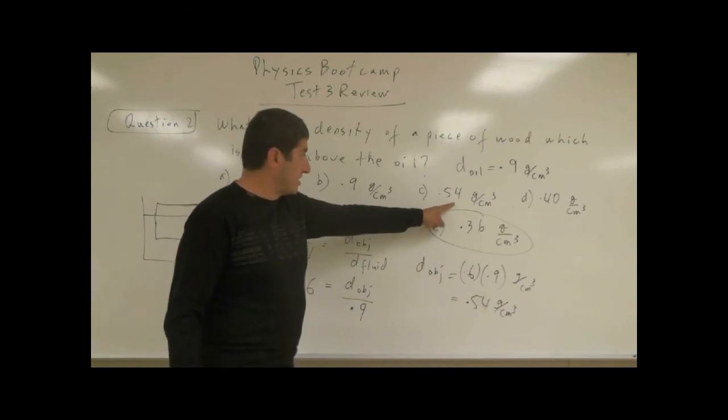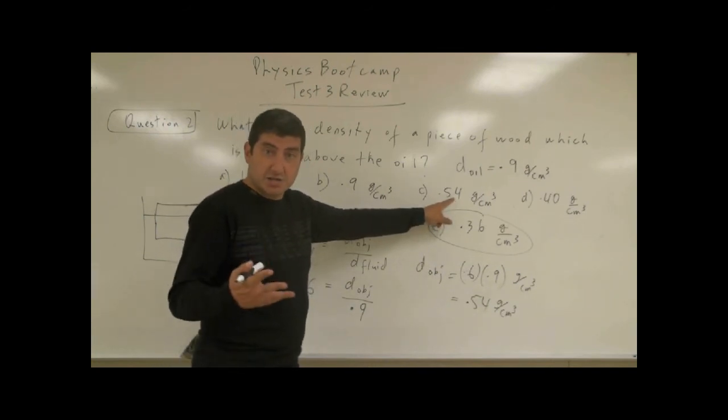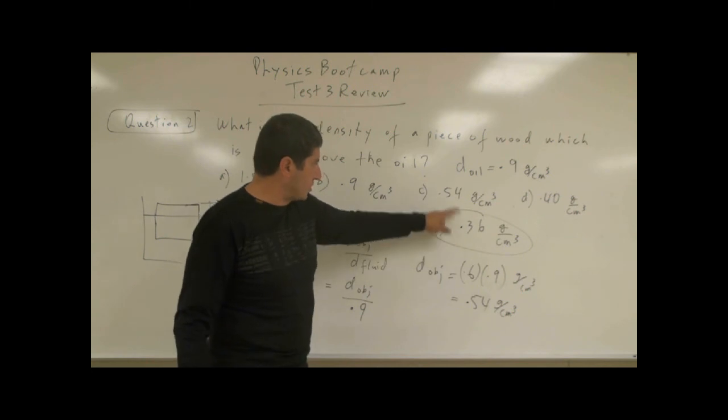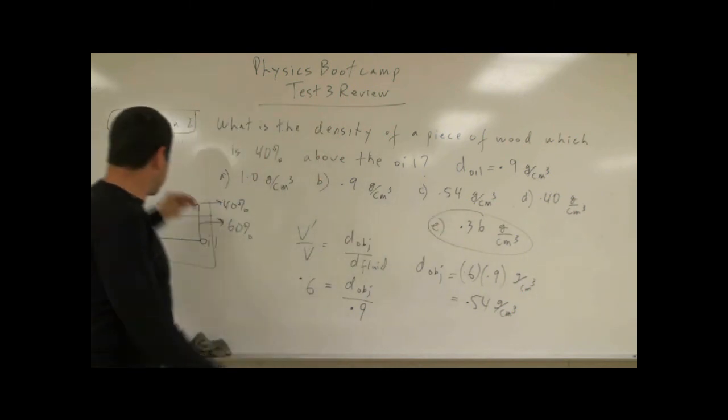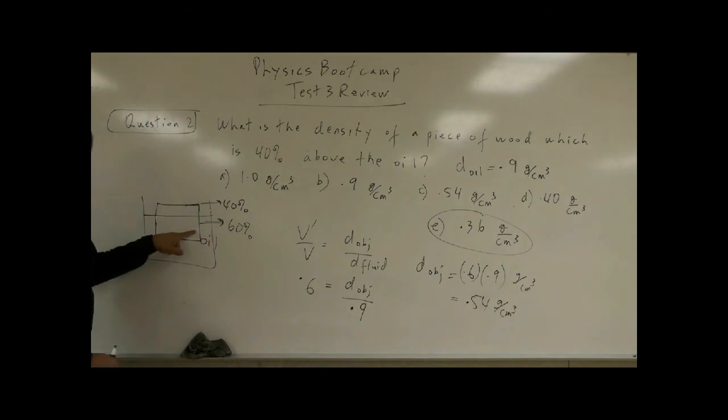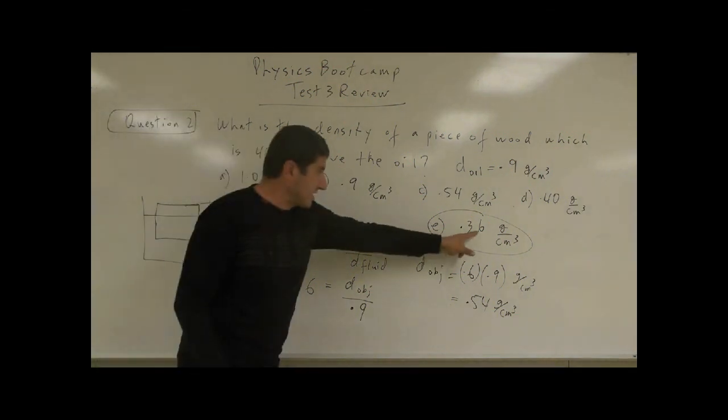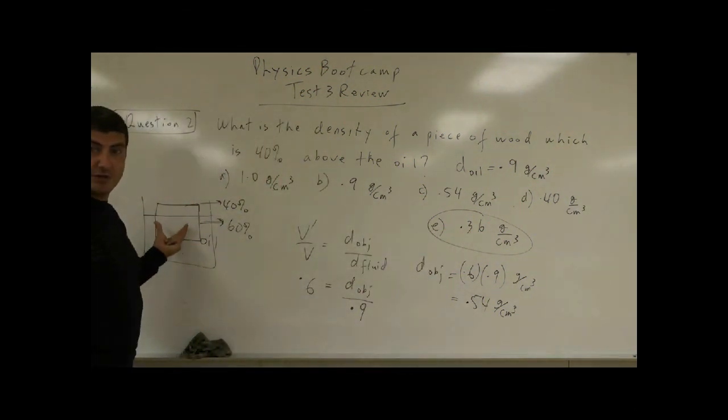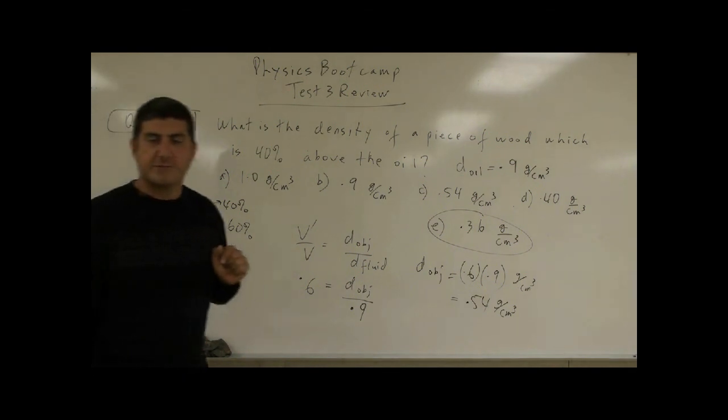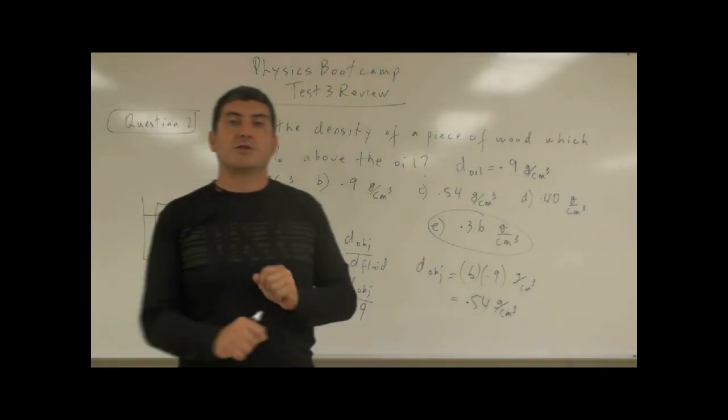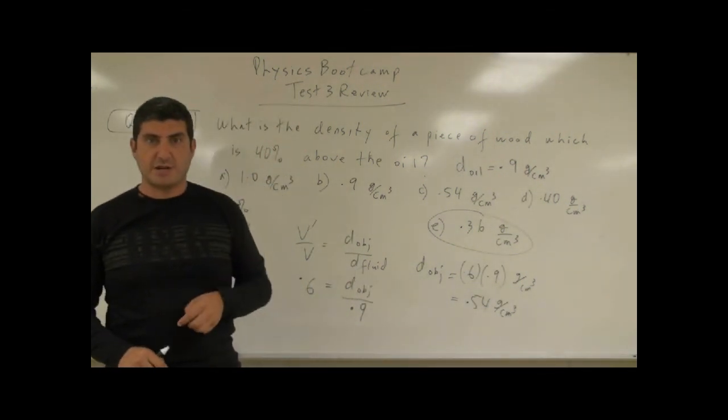Now, why does that make sense? Well, if the wood was denser, right? 0.54 is denser than 0.36. If the wood was denser, more of it would be submerged in the oil. 60% would be inside. Only 40% would be above, you see? But if it's 0.36, only 40% is below, 60% is above. So you've got to pay careful attention to the wording again. Thank you.